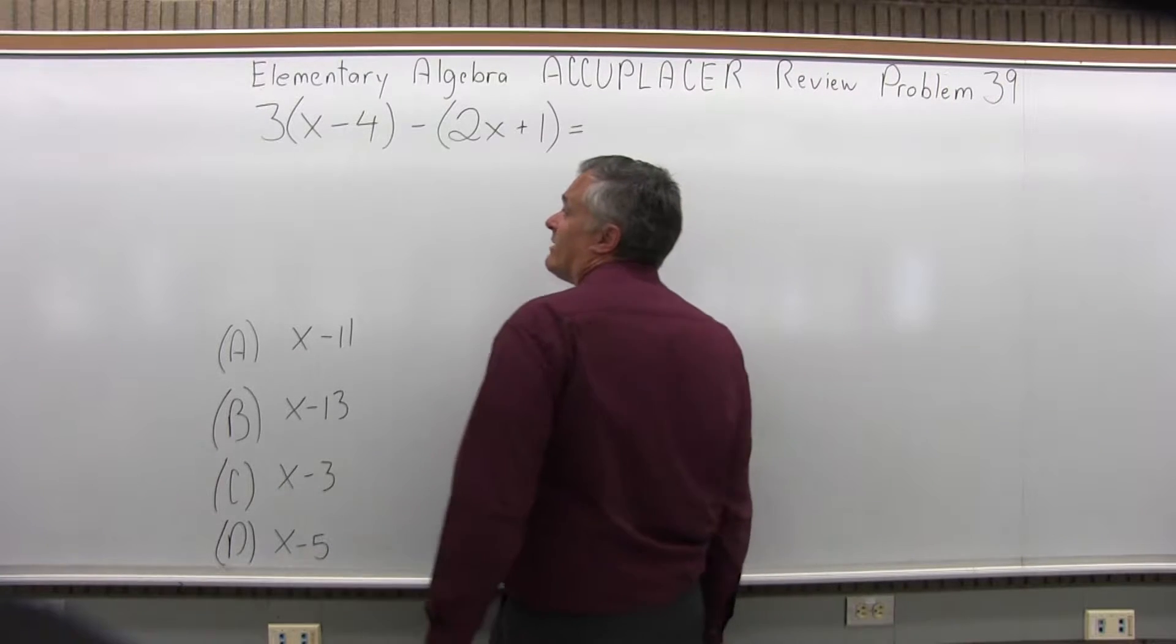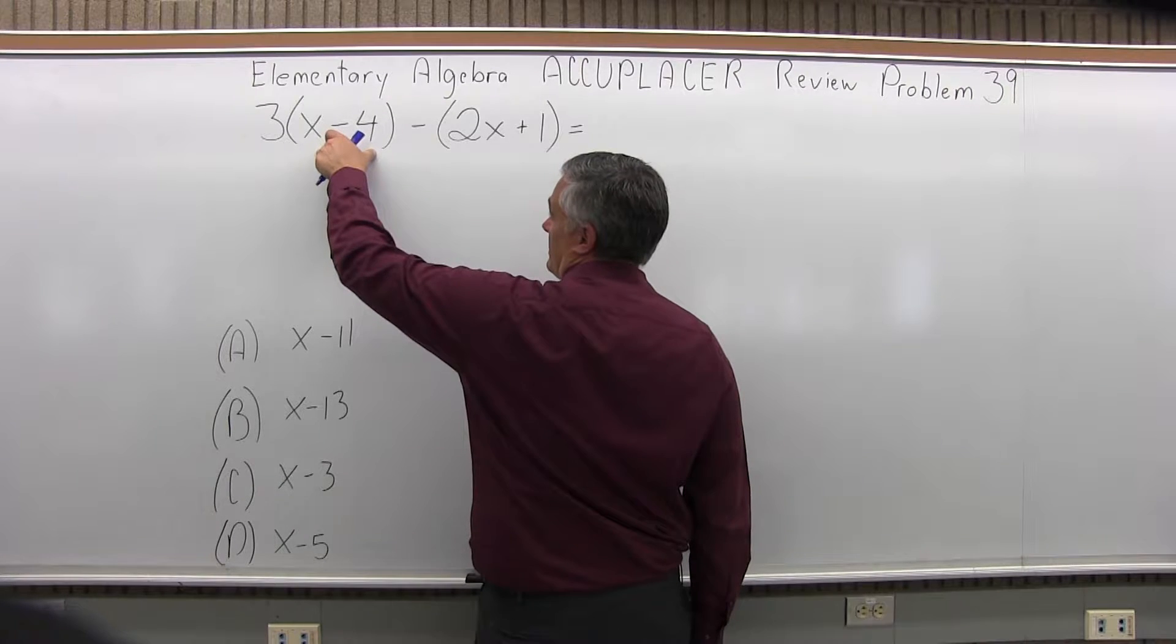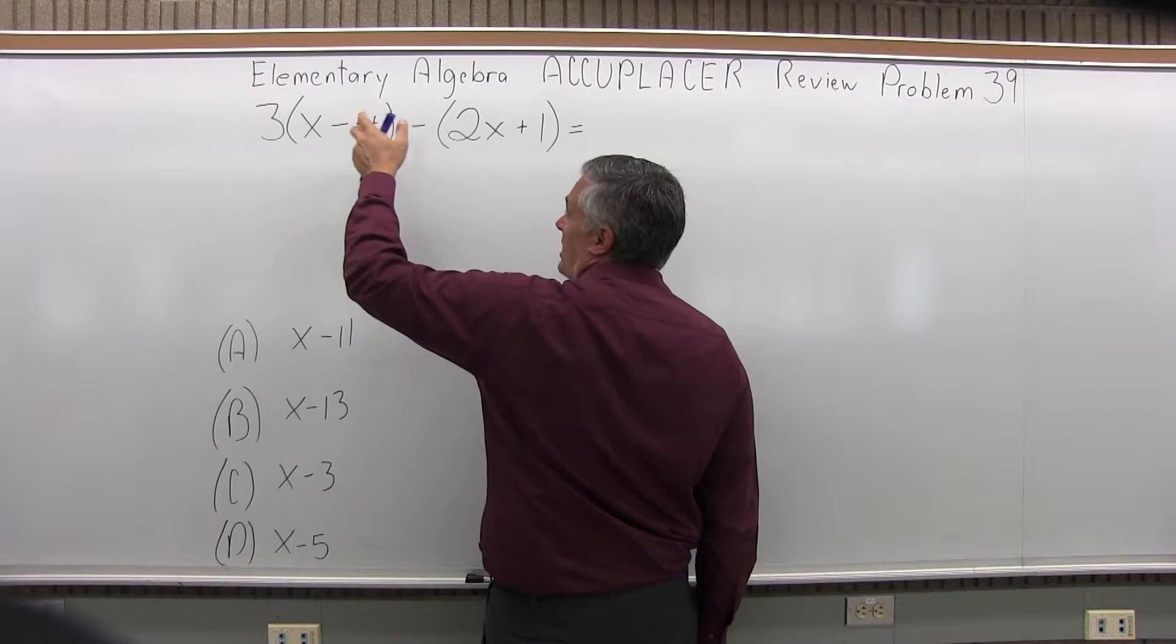So what we have to do first is multiply the value in front of the parentheses times each item in the parentheses and then combine like terms.